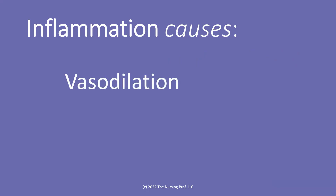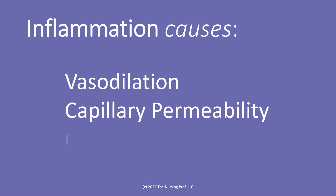However, this causes inflammation, and inflammation causes vasodilation to occur. If you think back on all the different things that inflammation would cause, we get vasodilation, we get capillary permeability, and lastly we also get clotting. These three things start to occur in the patient's bloodstream as a result of giving that transfusion.